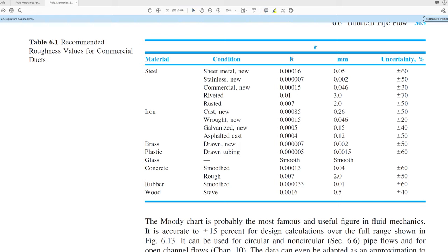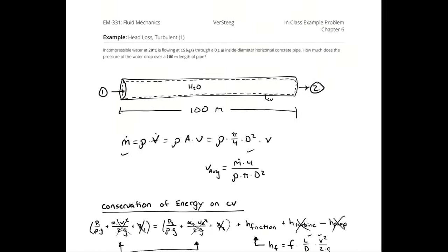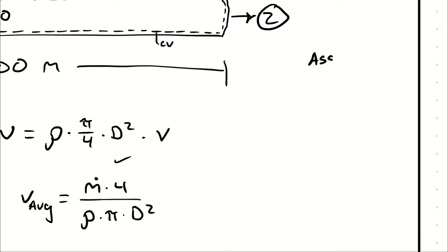I can read off epsilon values either in imperial units or metric units for a variety of substances. For concrete, I actually have two values, one for smoothed, one for rough. So I have to make an assumption about what type of concrete I have here. If I have a pipe through which water is flowing, especially a 100 meter long pipe, and especially one that's 10 centimeters in diameter, it's more likely to be rough. So I'm going to use an epsilon value of 2 millimeters. I should really list that as an assumption.